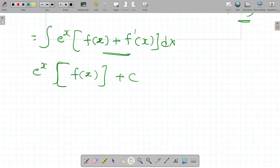So finally, we got e power x times f of x, which is 1 by x plus 1, plus constant of integration.